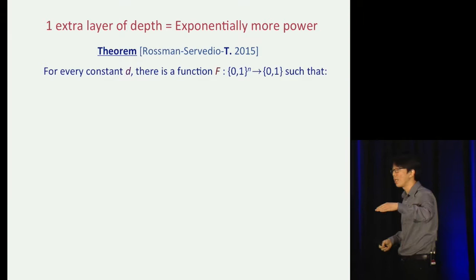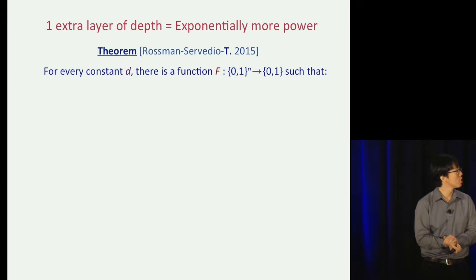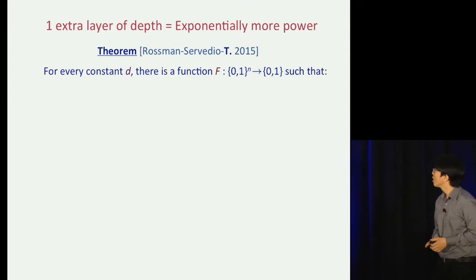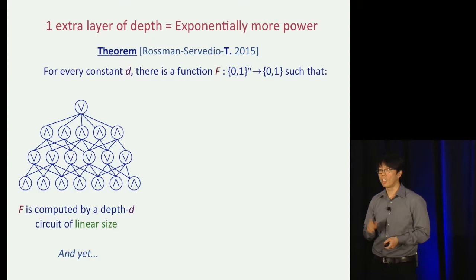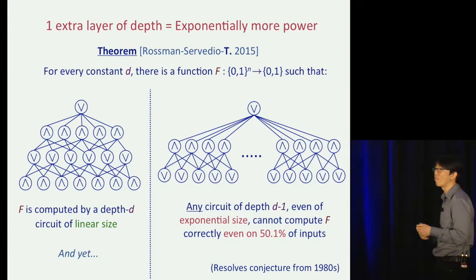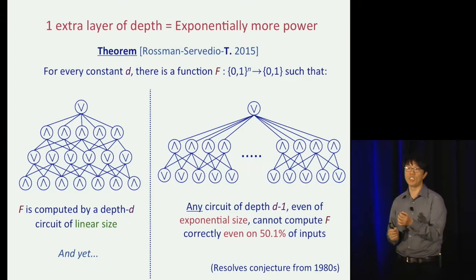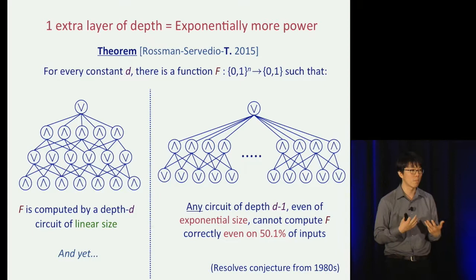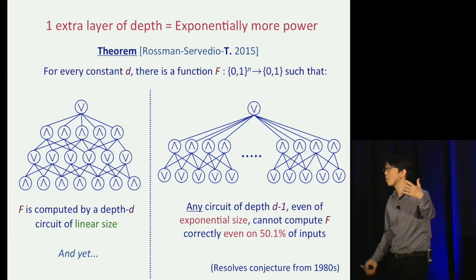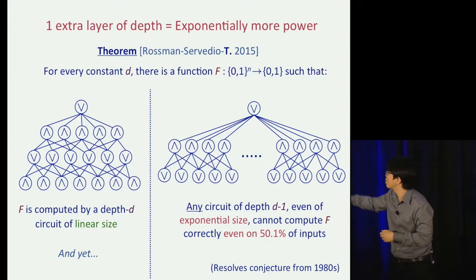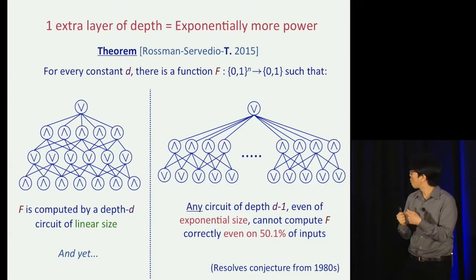For every constant d denoting depth — think of d as 10 or 100 — there is a function f such that: f is computable by a depth-d circuit of linear size, so if allowed depth d, it can be computed very efficiently. And yet, f cannot be computed by depth-(d-1) circuits in a strong sense. Any circuit of depth d-1, even of exponential size, cannot even achieve slight correlation with f — it cannot compute f correctly on even 50.1% of inputs. Since f is Boolean-valued, the constant-zero or constant-one function already achieves 50% accuracy trivially. So this is a strong separation between the power of depth-d and depth-(d-1) circuits.